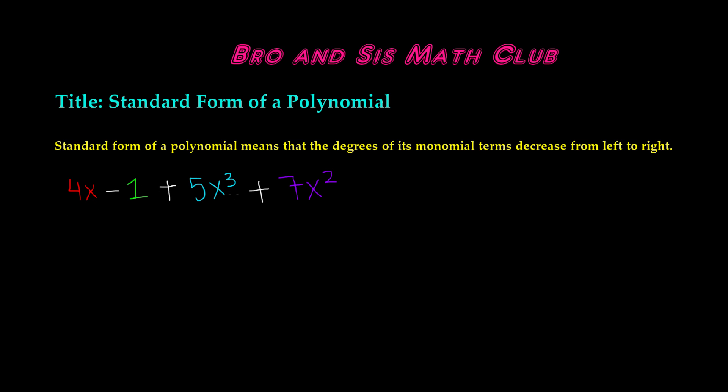So we have 4x, 1, 5x cubed, and 7x squared. Each of these are monomials. The degree of a monomial is just the sum of the exponents of its variables. The degree of a non-zero constant is 0 because 0 has no degree. So first let's go ahead and determine the degrees.